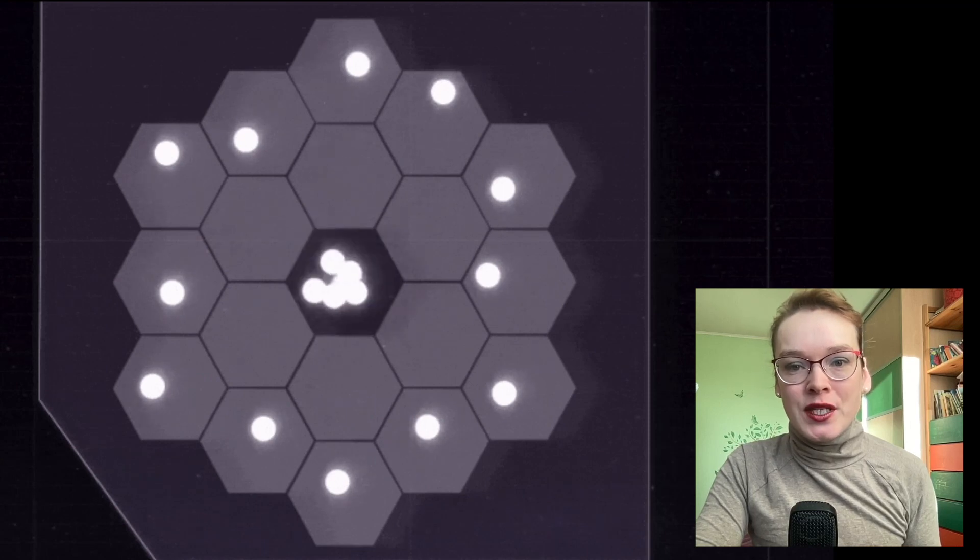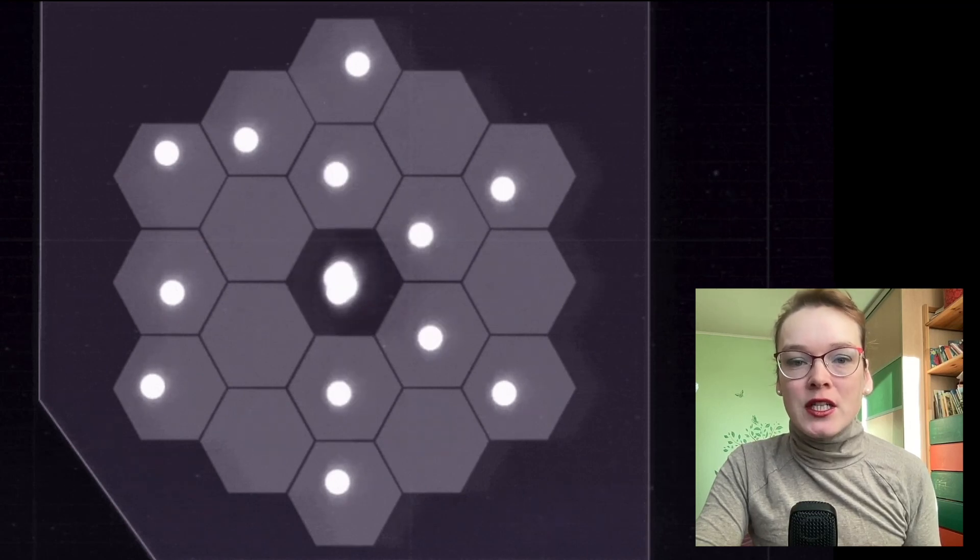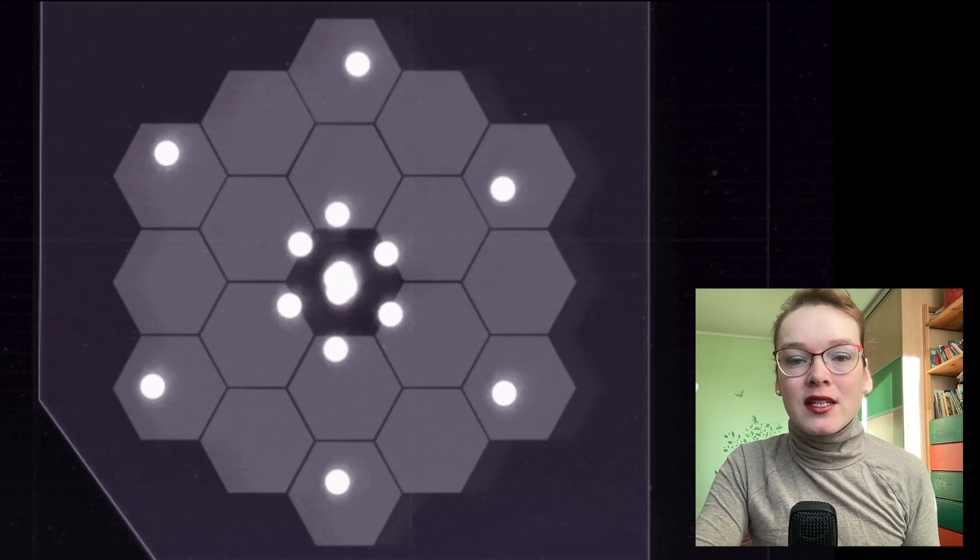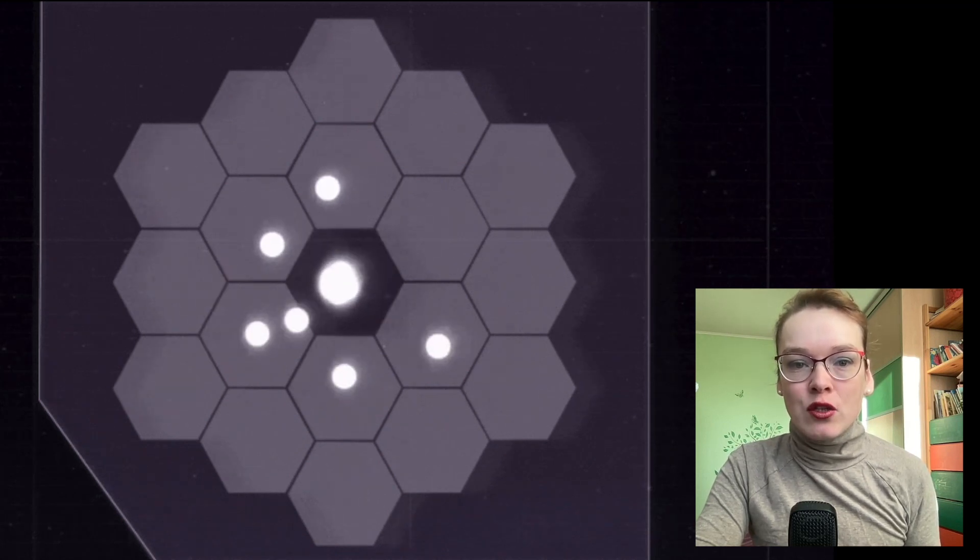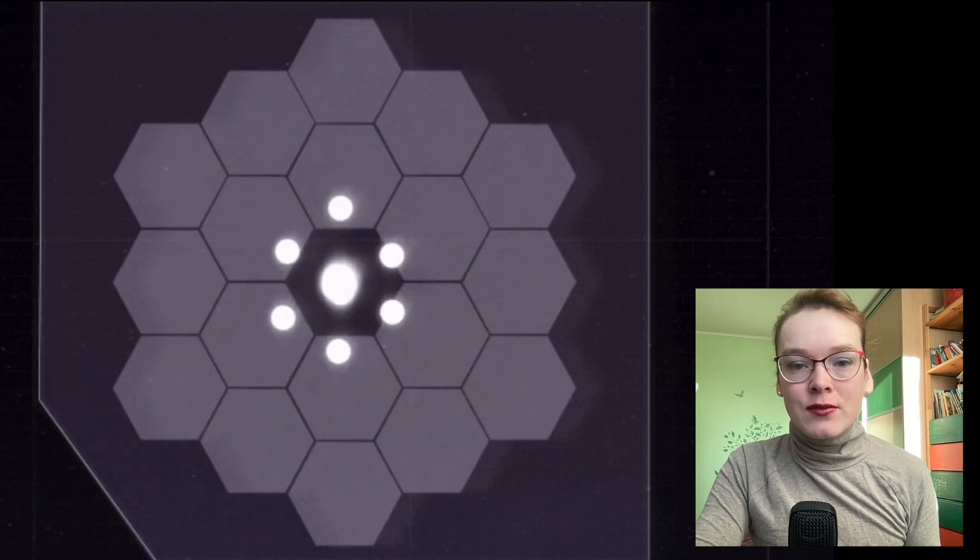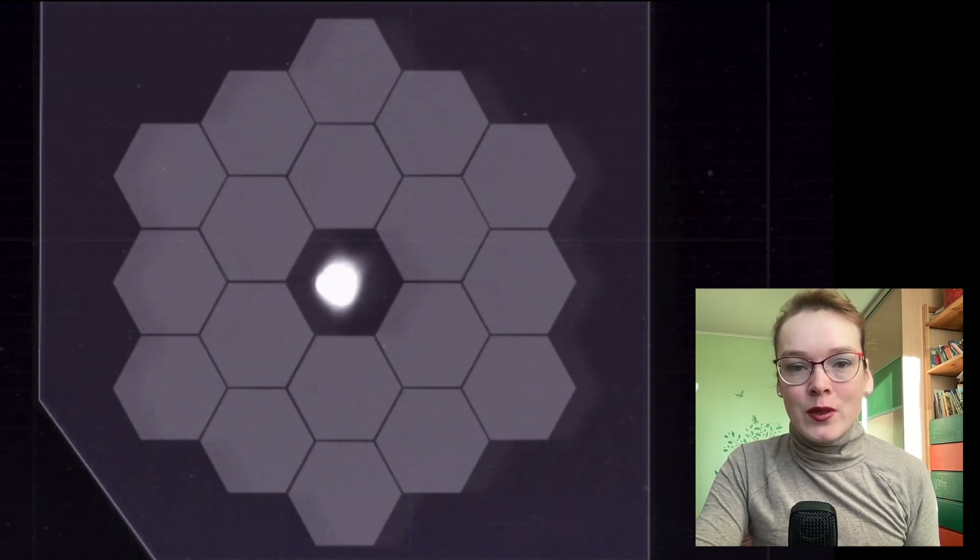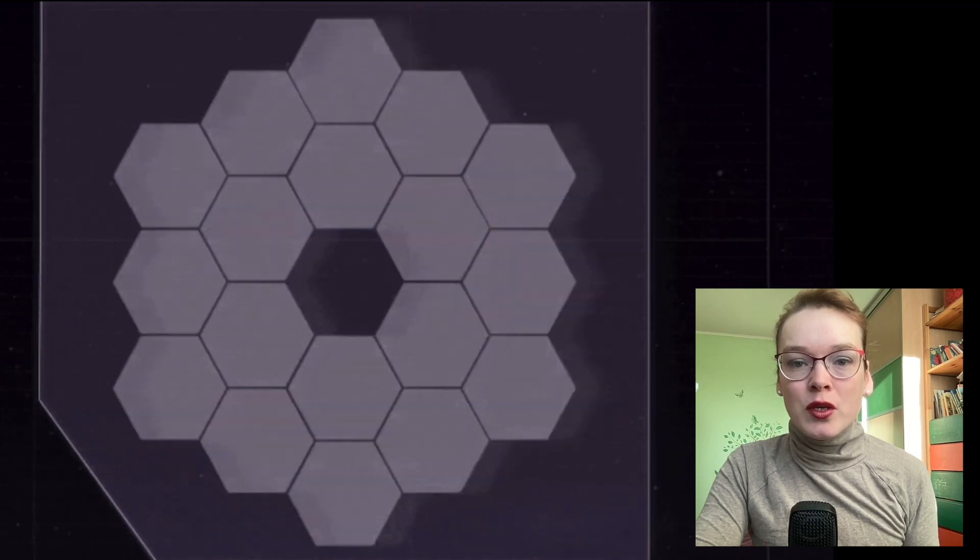The James Webb Space Telescope team announced the successful completion of the fifth stage of the optical system alignment, during which they fine-tuned the position of the mirror segments, as well as the Near-Infrared camera instrument. At the same time, scientists have published new images of the star, as well as the selfie of the primary mirror of the telescope.